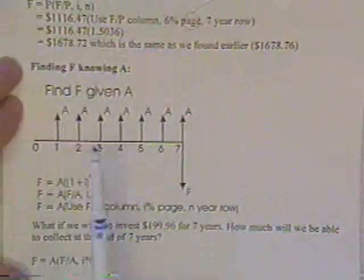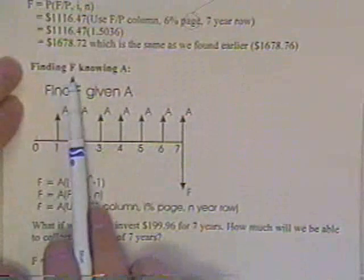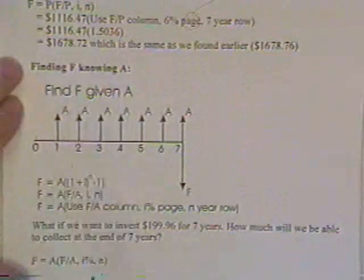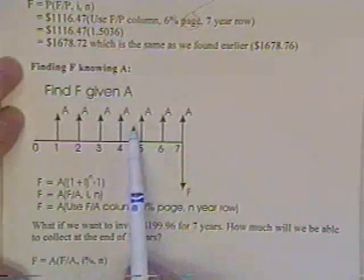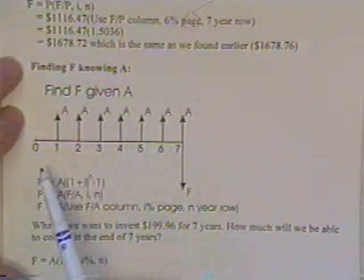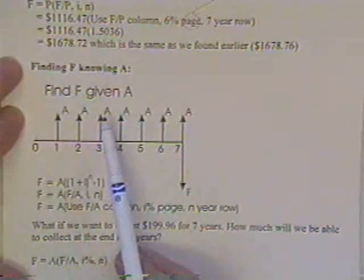All right. Now then, let's assume that you would like to find F knowing the annuity. A minute ago, we took F and found the annuity. Then we took the present value and found the annuity.